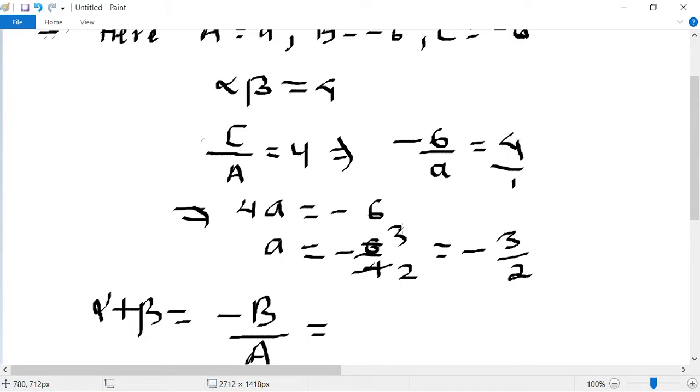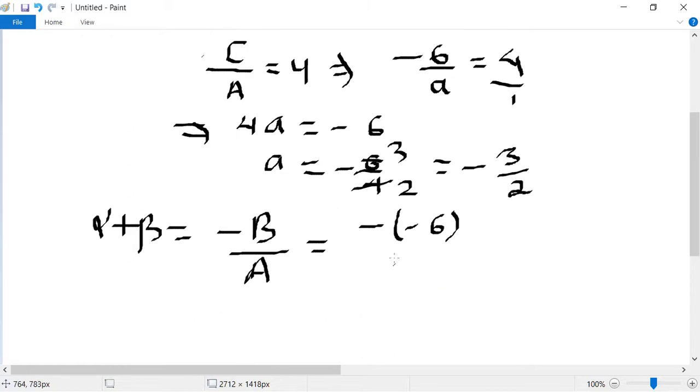Minus b की value minus 6 upon a. a के जगा पे value आजाएगे minus 3 by 2. Minus minus plus, 6 हो गया और a की value minus 3 by 2.